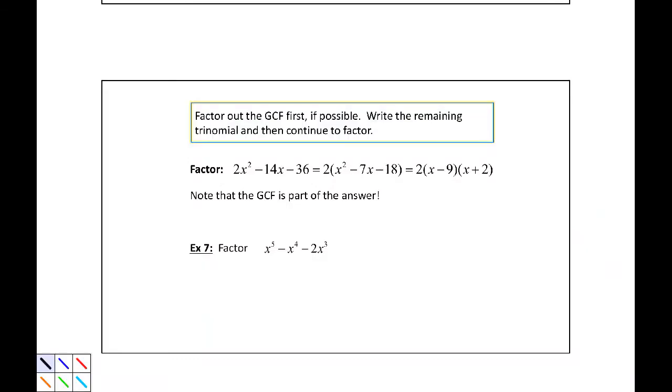In these examples, we are going to factor a greatest common factor and then factor a trinomial. Our example says to factor out the greatest common factor first if possible, then write the remaining trinomial and continue to factor if possible.